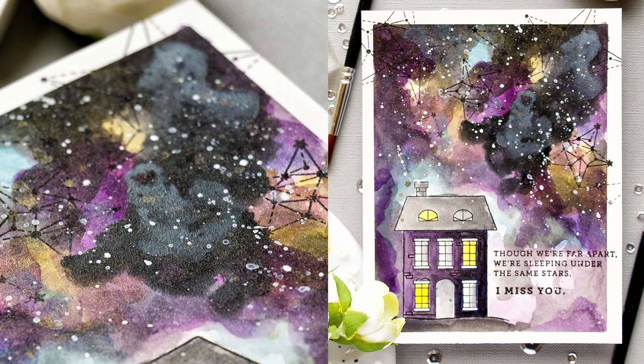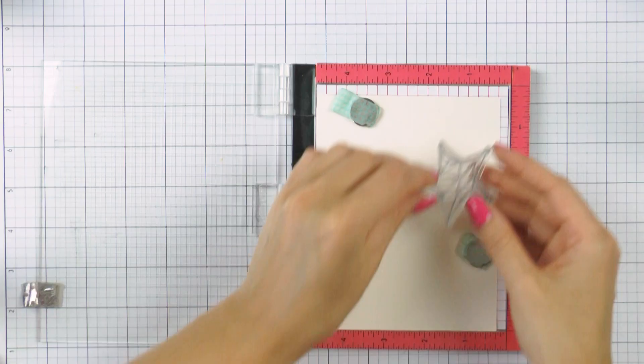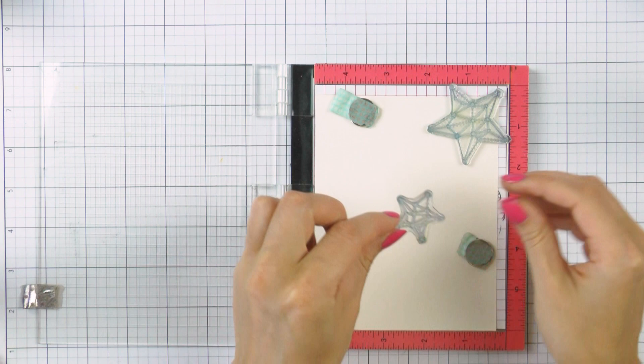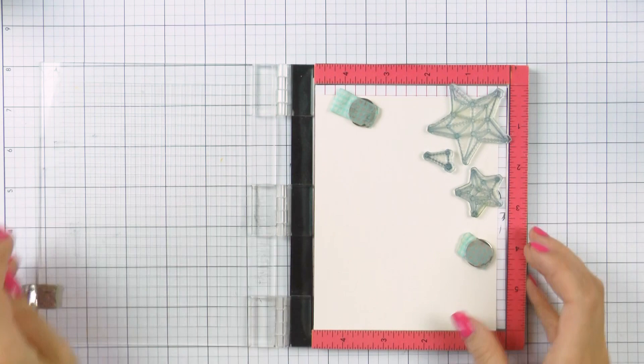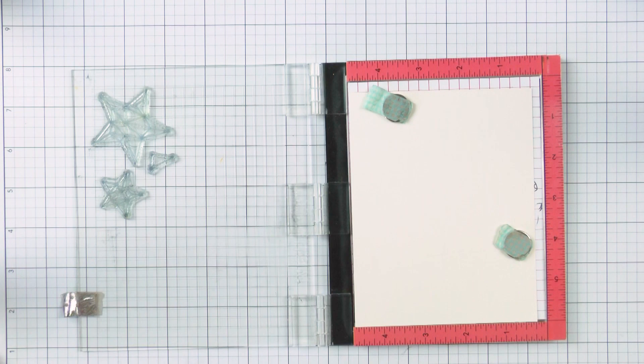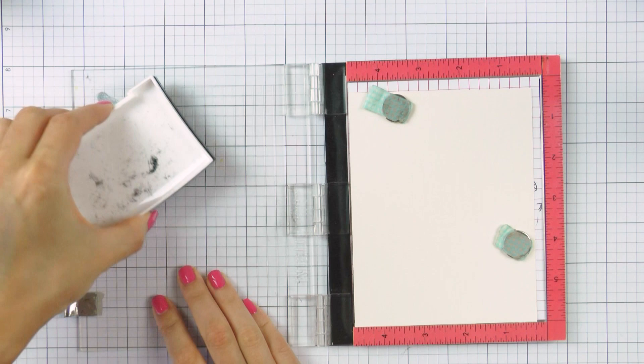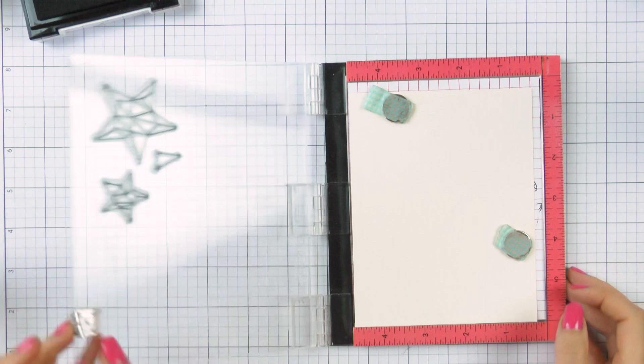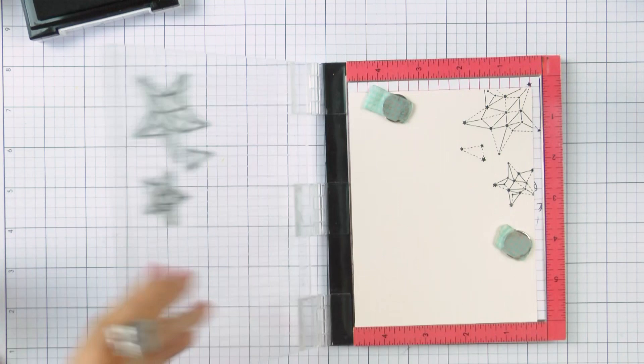I'm starting by stamping several stars in VersaFine Onyx Black ink onto watercolor paper using my mini MISTI stamp positioner. The paper I'm using today is Arches Hot Press watercolor. It is smooth and perfect for stamping and then watercoloring. The reason I'm using VersaFine Onyx Black ink is because it is nice and rich and it is also waterproof and this is all I need for this project.